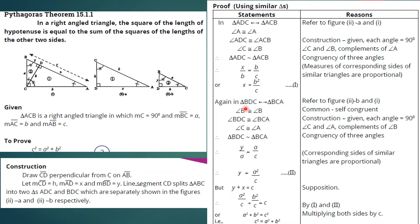Again, triangle BDC is corresponding to triangle BCA. The first statement: angle B in triangle BDC is congruent to angle B in triangle BCA, because it is common and self-congruent. The second statement: angle BDC is congruent to angle BCA, because both angles equal 90 degrees — angle BDC was constructed as 90 degrees.